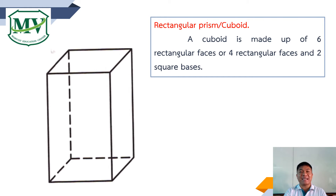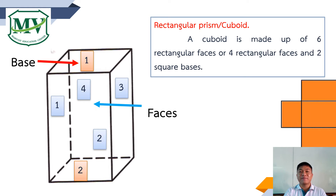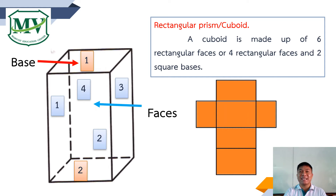These are the faces of the rectangular prism or cuboid: one, two, three, and four. These are the bases: one and two. To help us understand the face and base of a rectangular prism or cuboid, here is the net. As you can see, there are six rectangular faces in the net of the rectangular prism or cuboid.